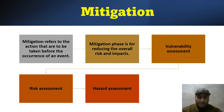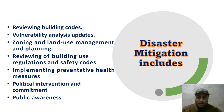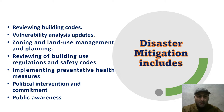Mitigation refers to actions taken before the occurrence of an event to reduce overall risk and impacts. It includes vulnerability assessment, risk assessment, and hazard assessment, and is aimed at reducing economic losses. Examples include reviewing building codes, vulnerability analysis updates, zoning and land use management, implementing preventive health measures, and political interventions.